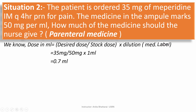This is divided by the stock dose — that is the available dose in the ampoule. The ampoule is marked 50 mg per ml, so that is the stock dose. So we have 35 divided by 50 mg, and since it is 50 mg per ml, we multiply by 1 ml, giving us 0.7 ml. The nurse should administer 0.7 ml to the patient.